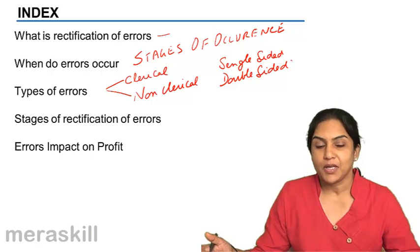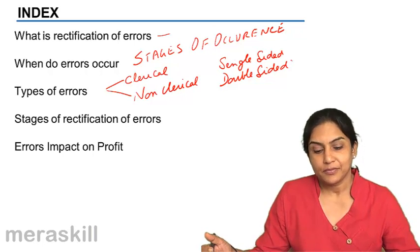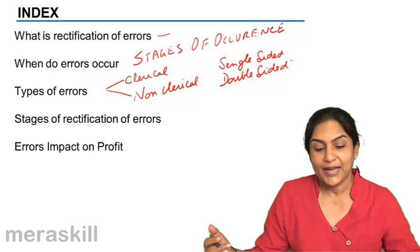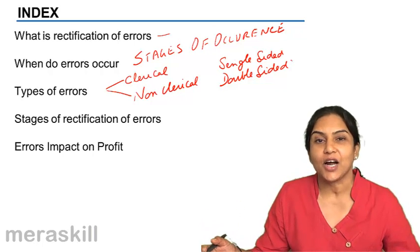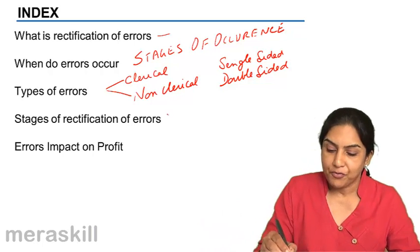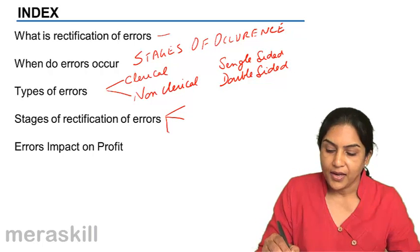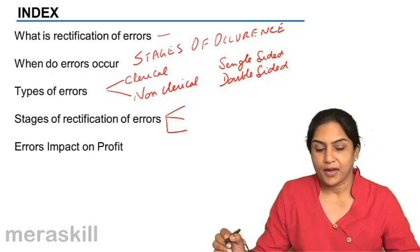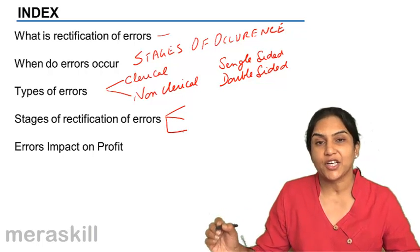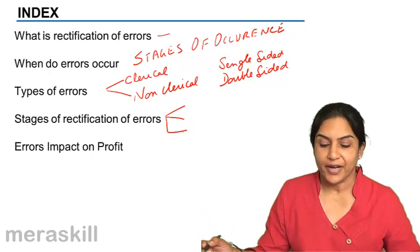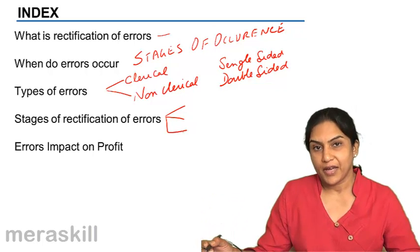It is also possible that we detect the errors only in the next accounting year. Therefore, there could be three stages of detection of errors based on which rectification will vary.